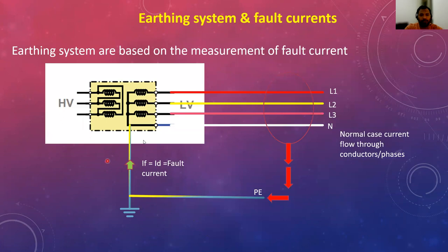Here I'm showing a picture of an HV/LV transformer. During normal operation, current flows from the LV side to the load and returns back through the neutral to the transformer. During the fault case, current flows through the ground. The current which flows through the ground is called the fault current.